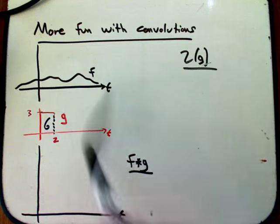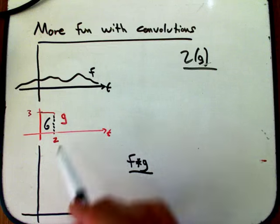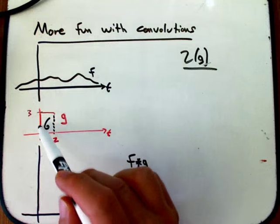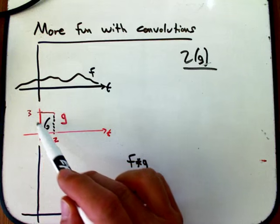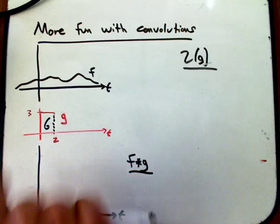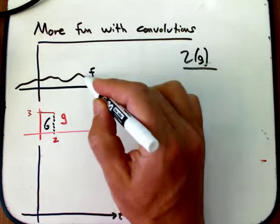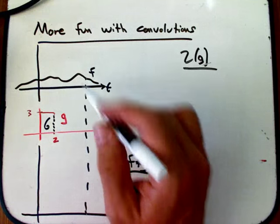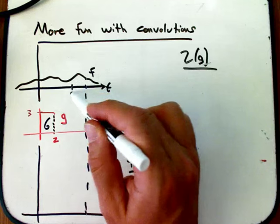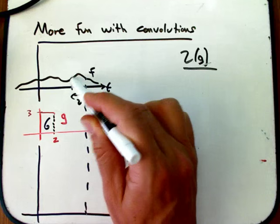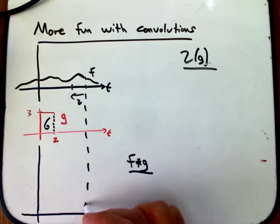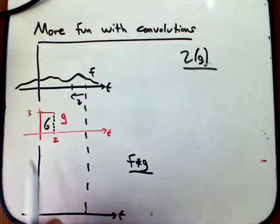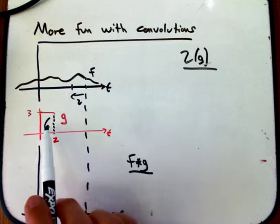And I'm going to convolve f star g. If this had been area 1, so this had been height 1 half, it would exactly been a weighted moving average of f. So for example, this value down here of f star g would window back by 2 and take the average of these values. All it's going to do, this is just 6 times that function.